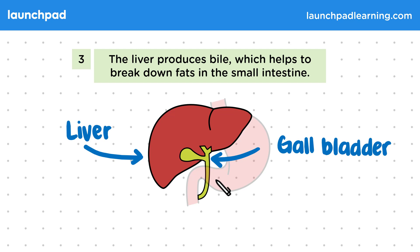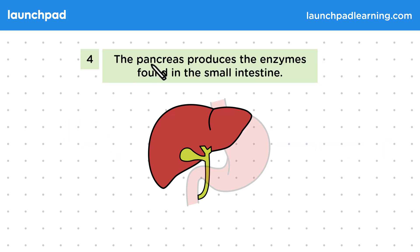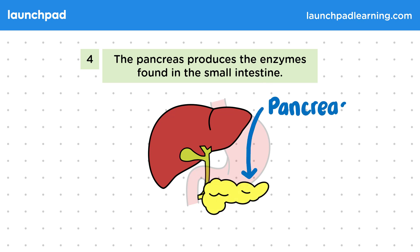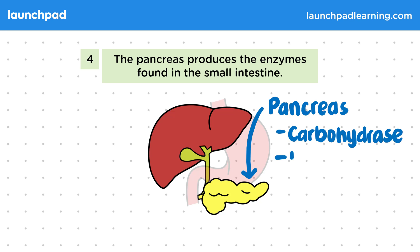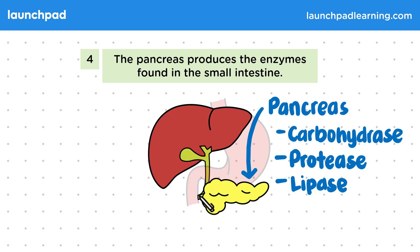The pancreas produces the enzymes found in the small intestine. It sits just below the liver and the stomach. This organ releases enzymes into the top section of the small intestine, close to where the gallbladder releases bile. It produces carbohydrase enzymes that break down carbohydrates, protease enzymes that break down proteins, and lipase enzymes that break down lipids or fats. All of these enzymes pass through into the top of the small intestine.